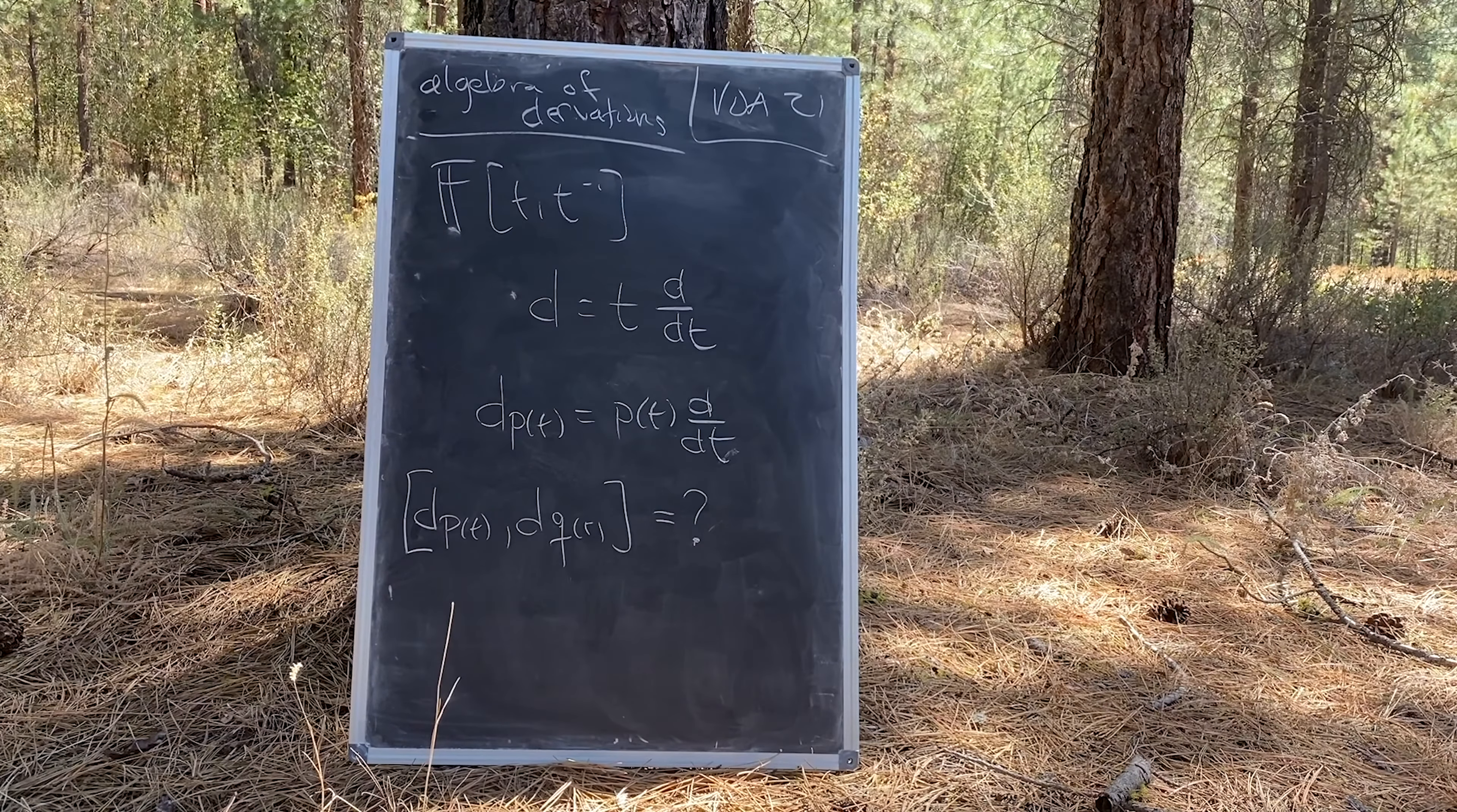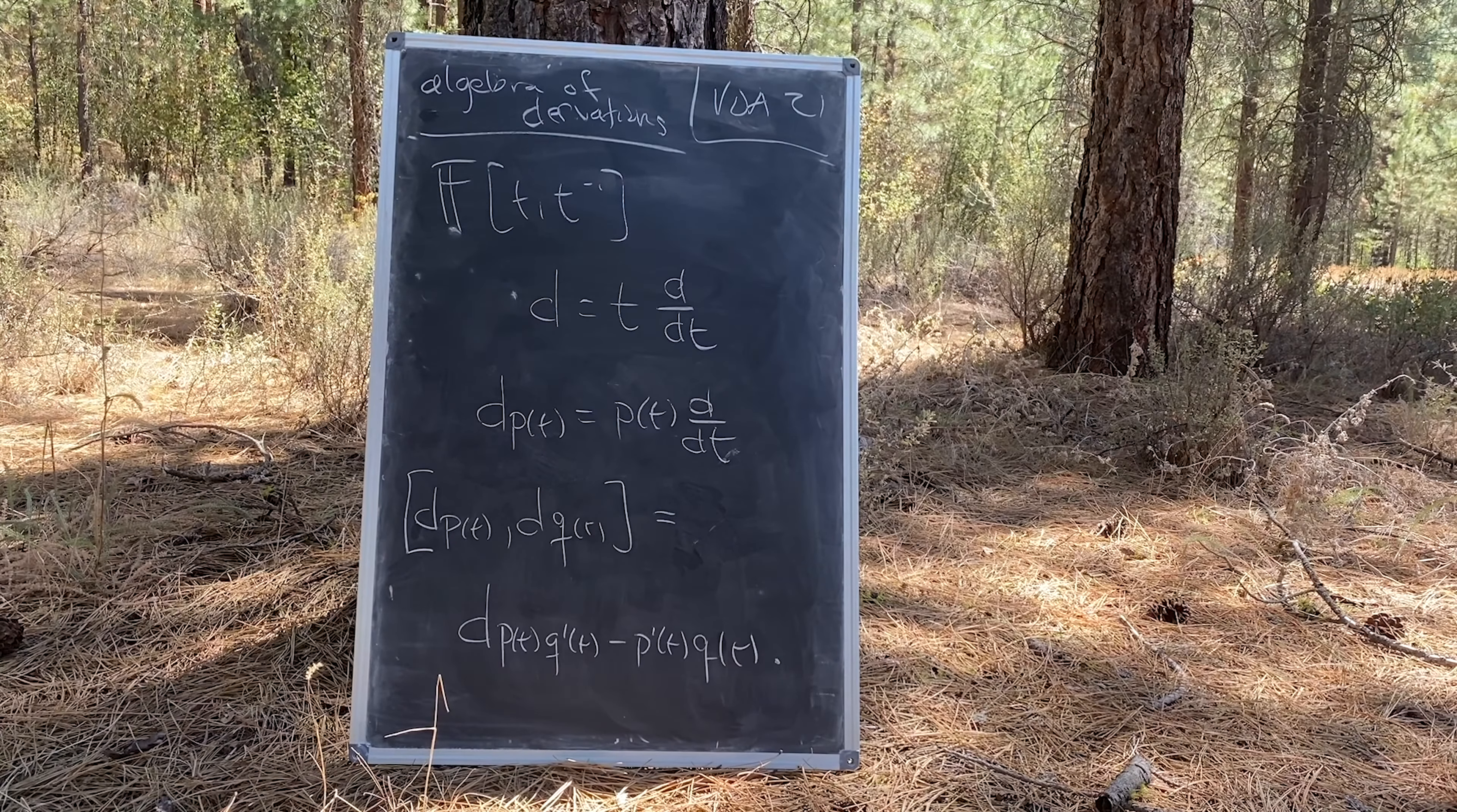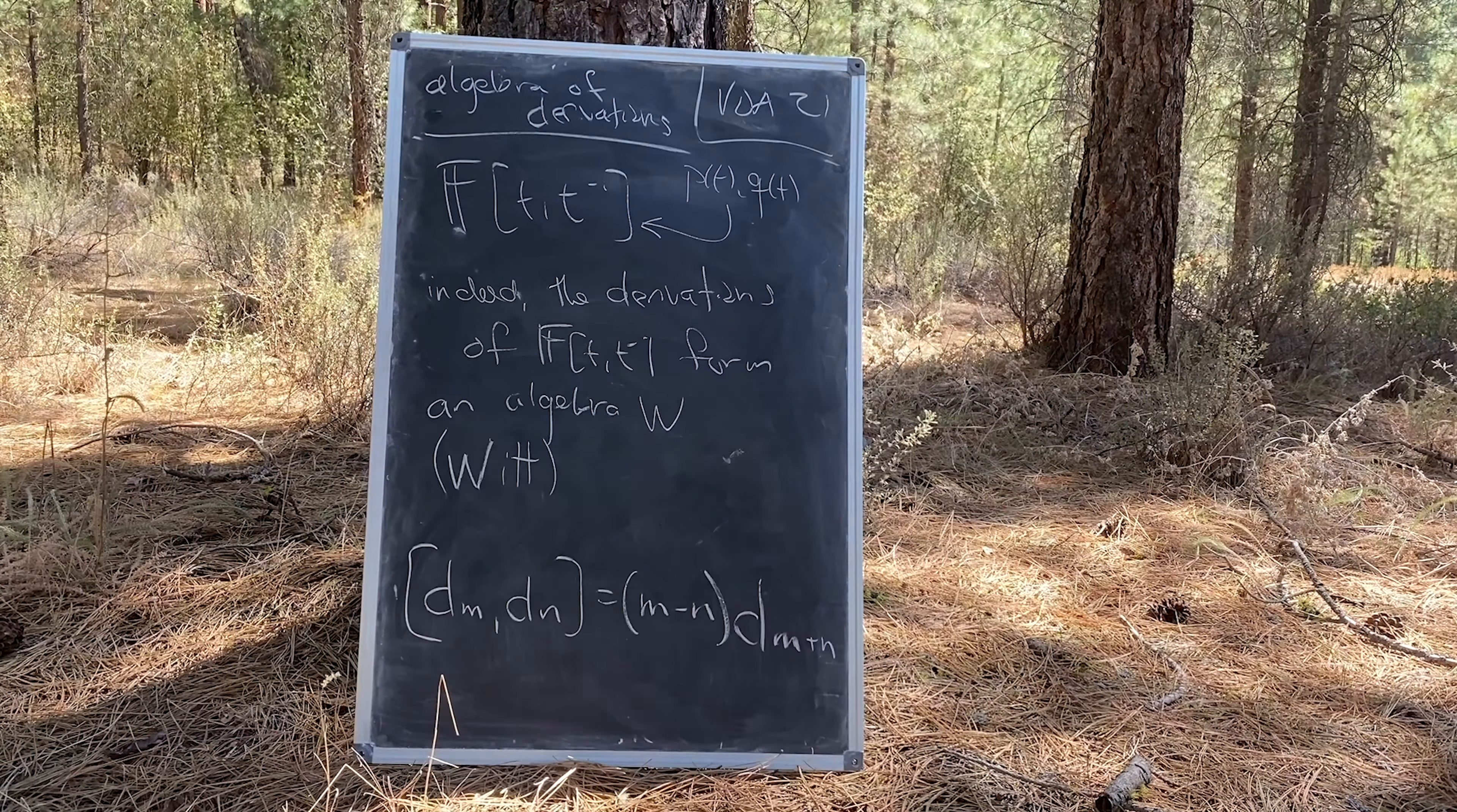We can now ask what is the commutator of two such operators? Well, surprise surprise, the operator algebra closes, forming a kind of representation over the Laurent polynomials. Put differently, the derivations of Laurent polynomials form an algebra, the Witt algebra.